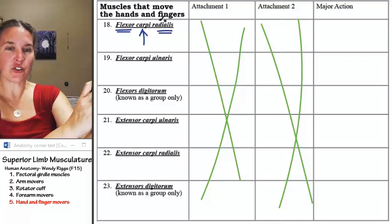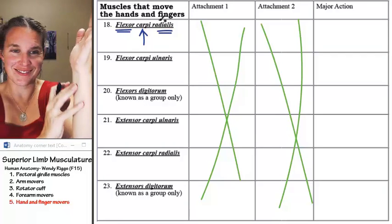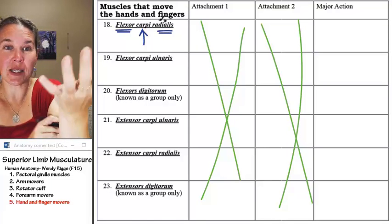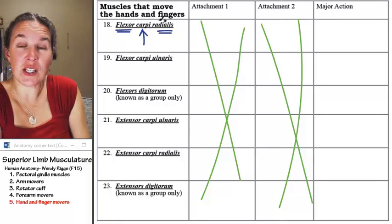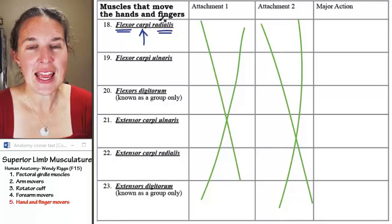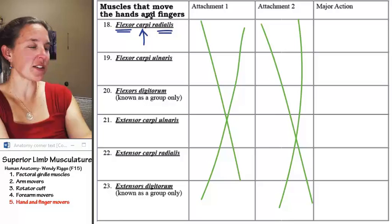It's on the flexor surface of your forearm, and it's on the radial side, which means when you're in standard anatomical position, it is on your lateral side. That's it. It flexes, and it's on the radial side.